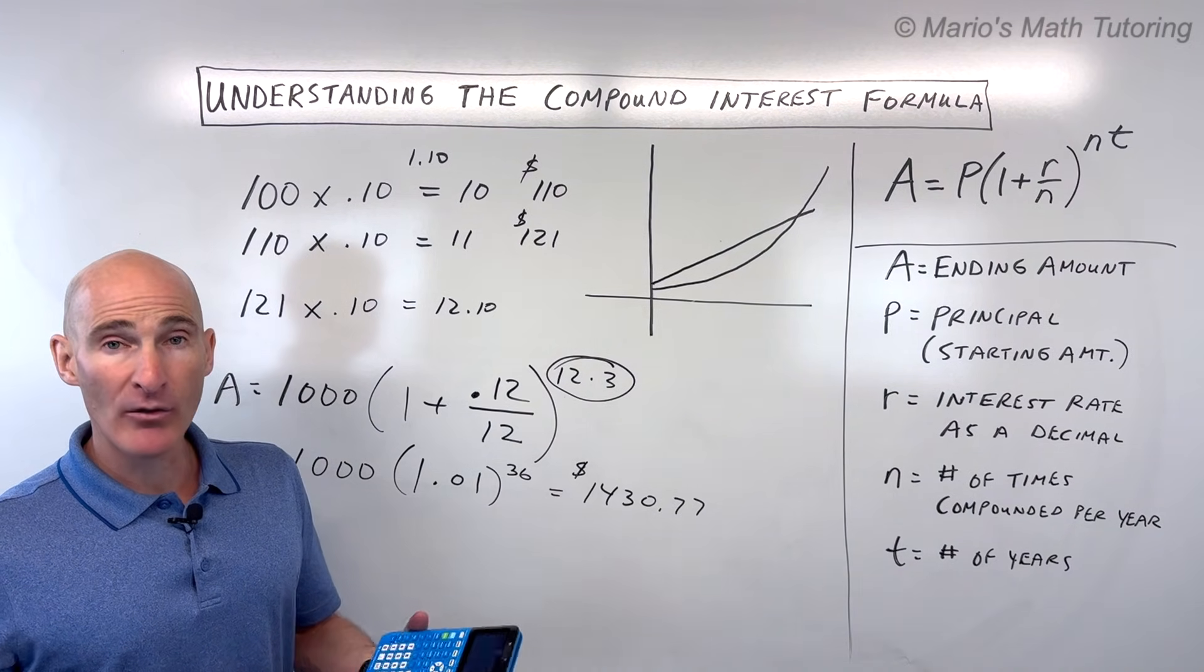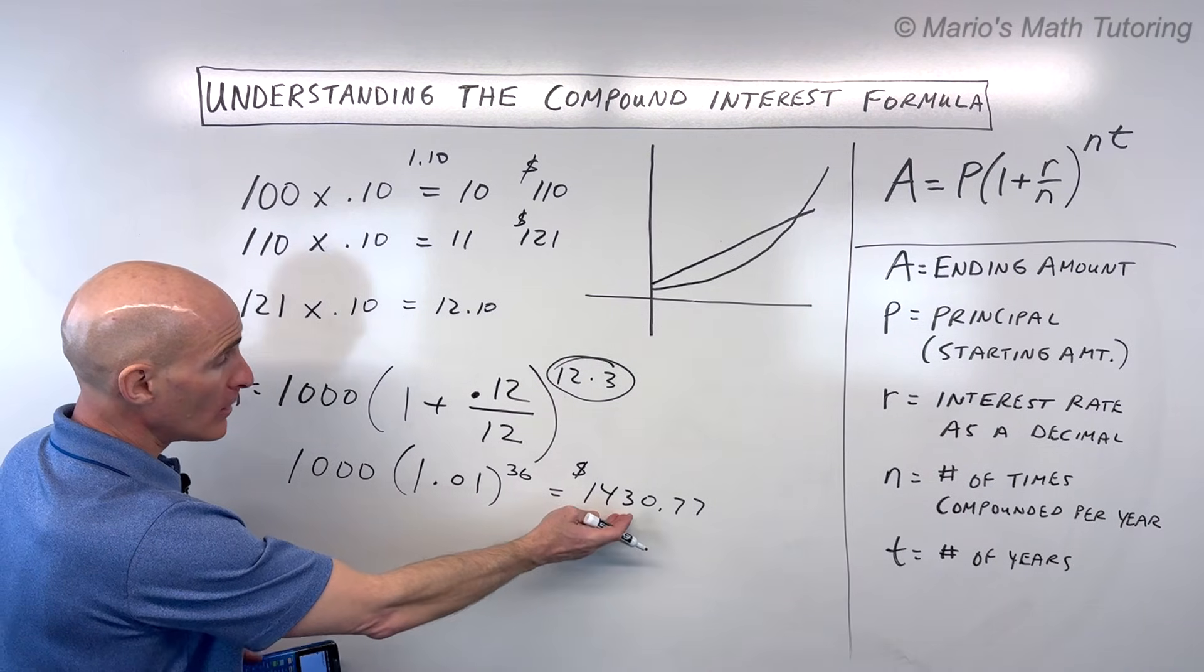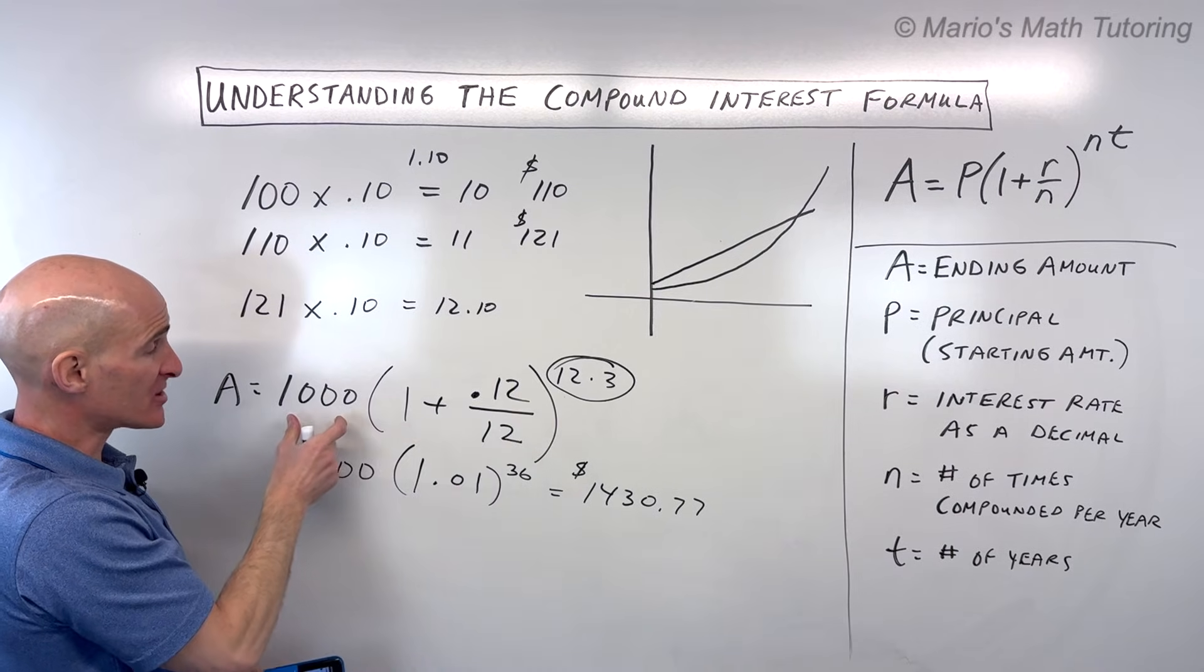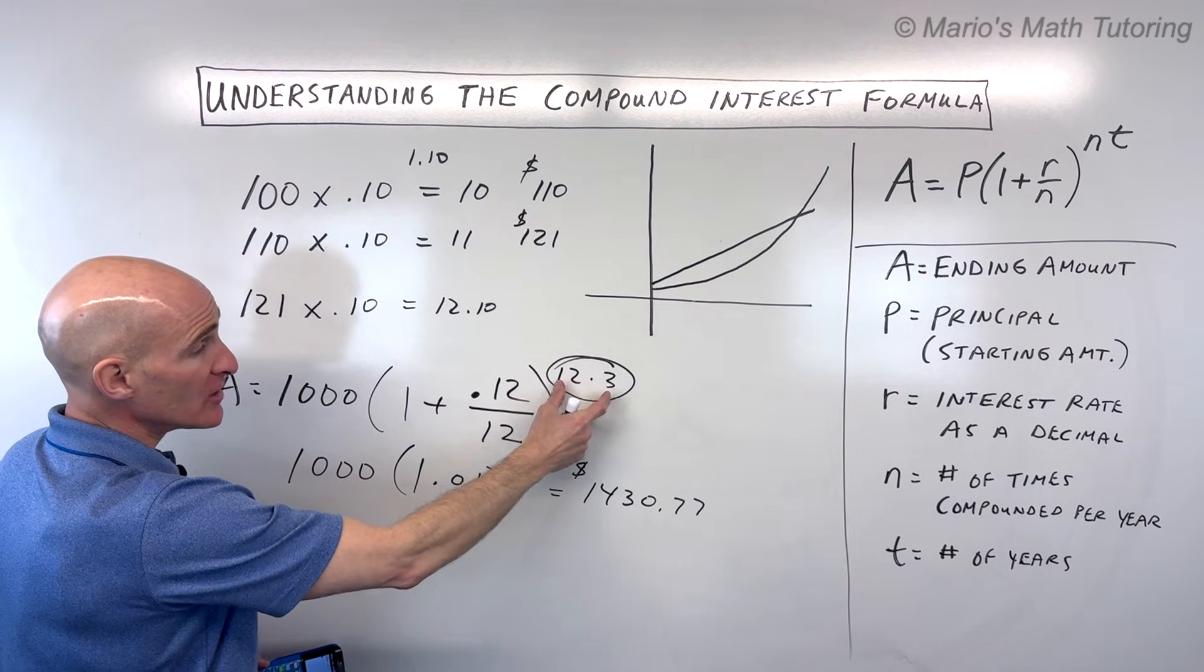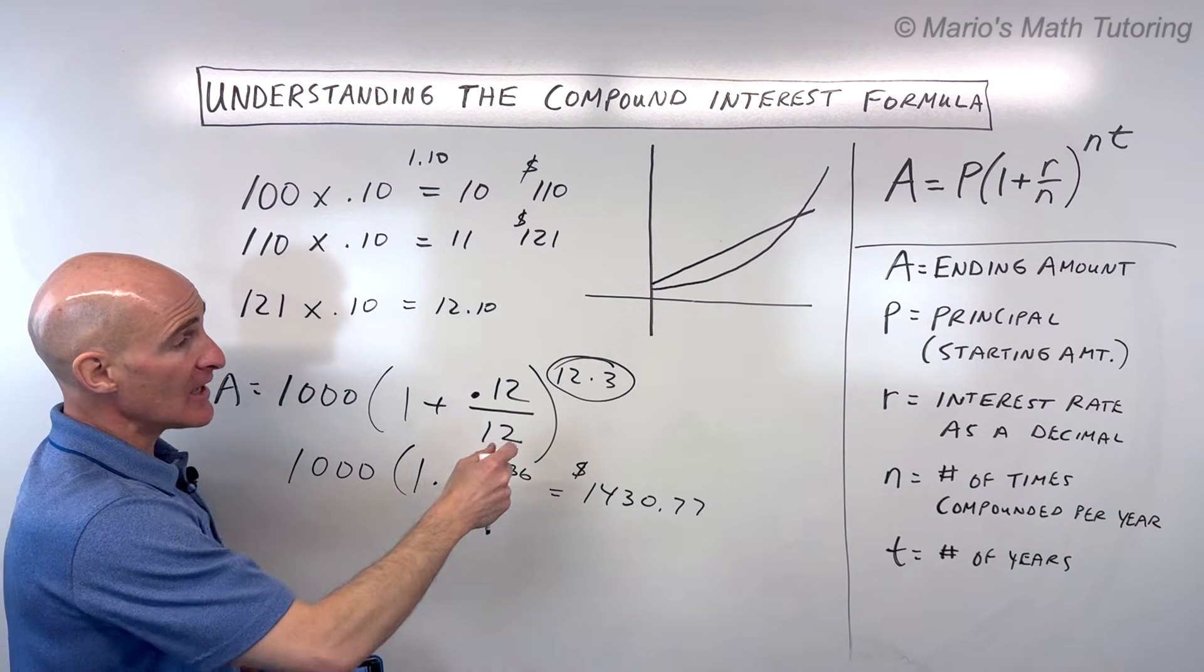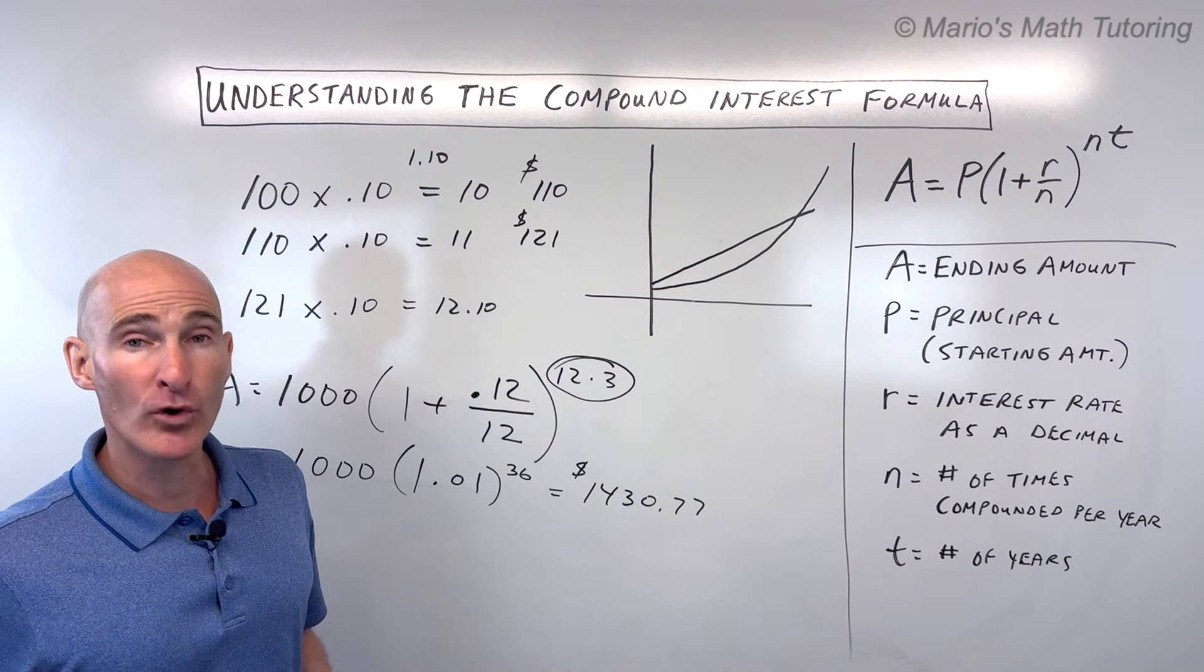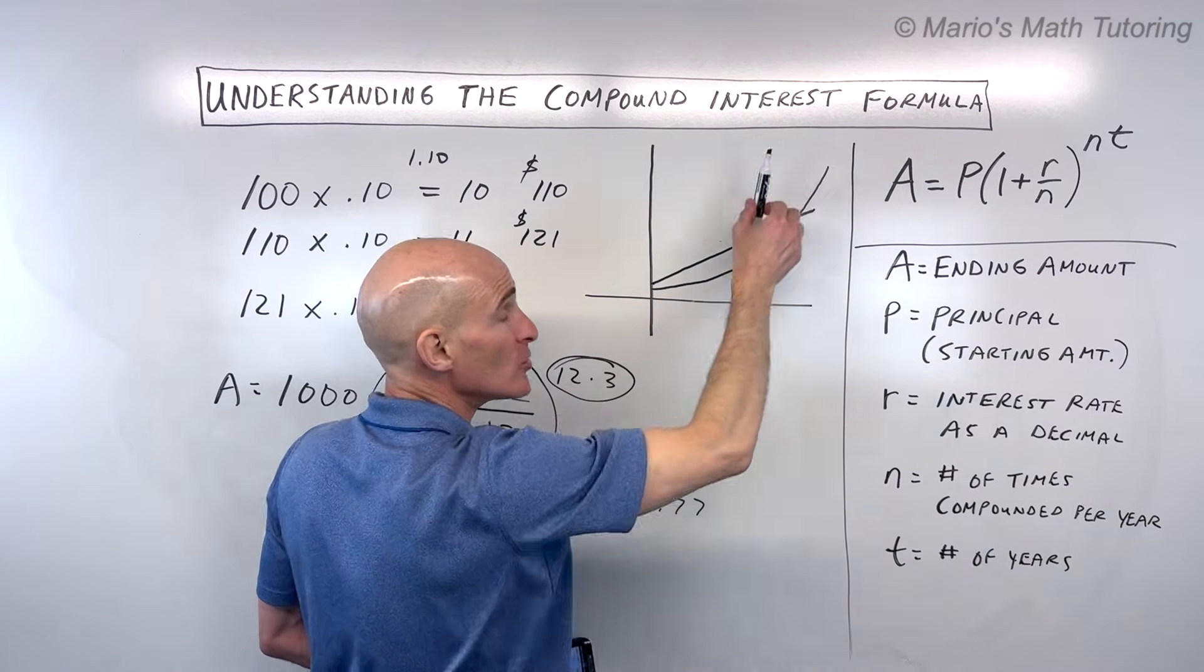So that's how the compound interest formula works. Now, if you want to end up with more, well, you could try to get a higher interest rate. You could start with a larger amount. That's your principle. You could compound more frequently. That'll help it grow a little bit faster. That's N, the number of times you're compounding. And T, you could have that investment for many more years. And that's where you really start to see the benefits of compound interest, where it starts to accelerate.